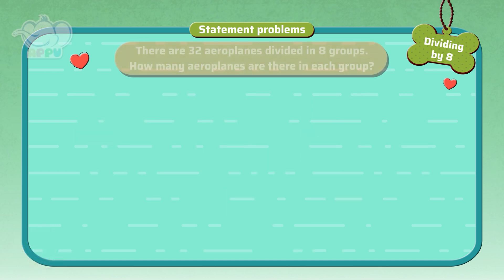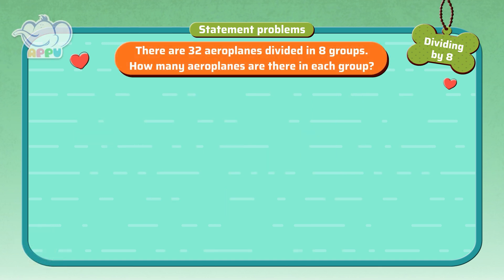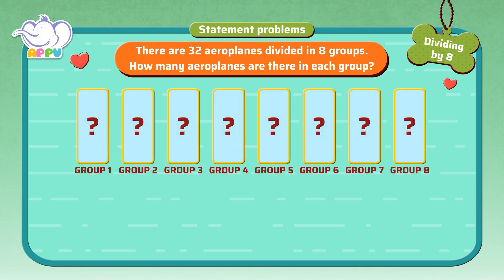There are 32 aeroplanes divided in 8 groups. How many aeroplanes are there in each group? To find the number of aeroplanes in each group, we divide 32 equally among 8 groups.